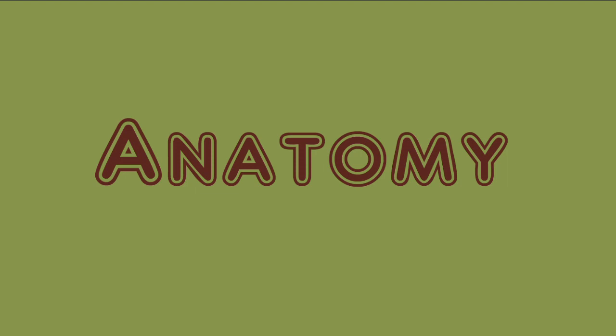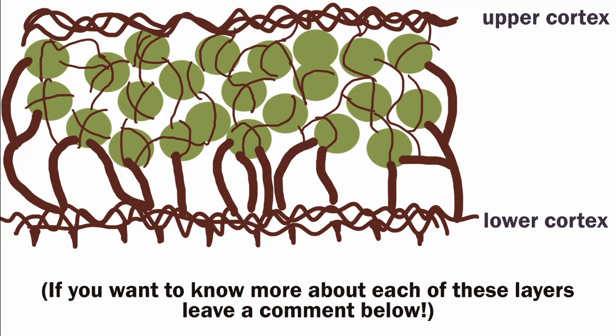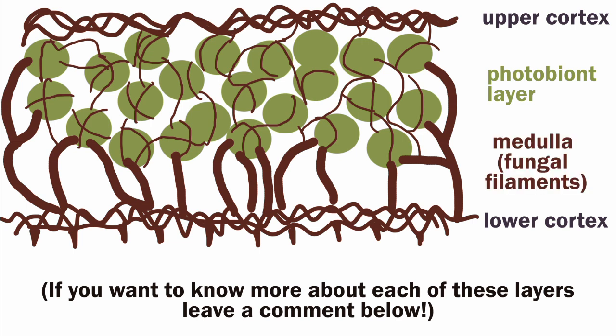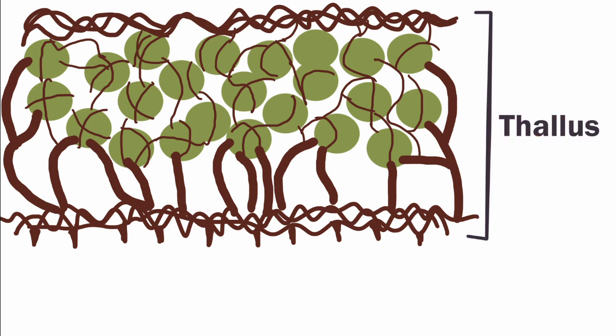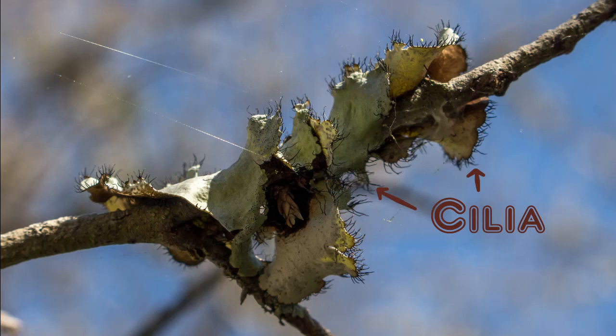Anatomy differs quite a bit between growth forms. Generally though, each has the following layers: the cortex, or basically the protective skin; the photobiont layer; the medulla. The entire lichen is called the thallus. There are different features that one can look for on the thallus to help with species identification, like cilia on this lichen, for example.